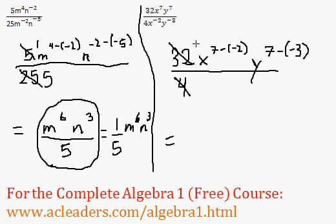32 over 4 is 8. x to the 7 minus negative 2 - that's equivalent to 7 plus 2, which is just 9. Times y: 7 minus negative 3 is equivalent to 7 plus 3, which is just 10.